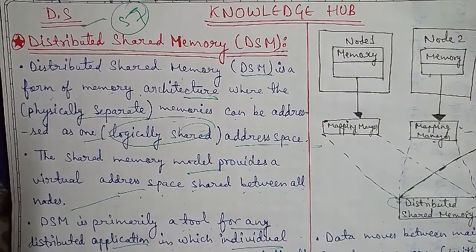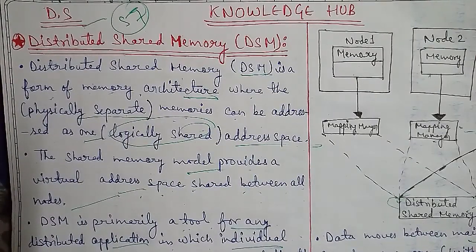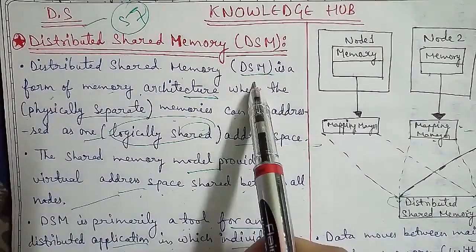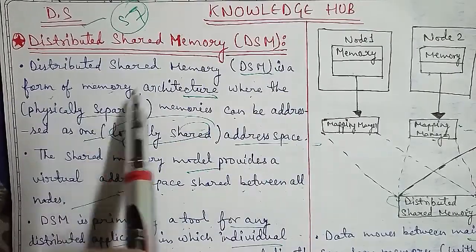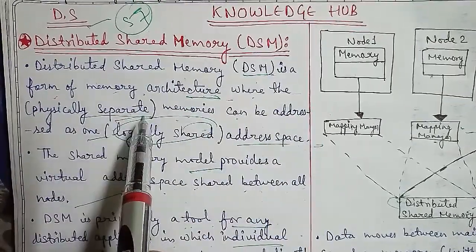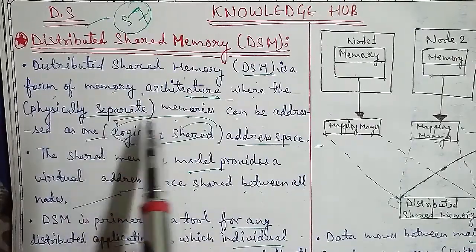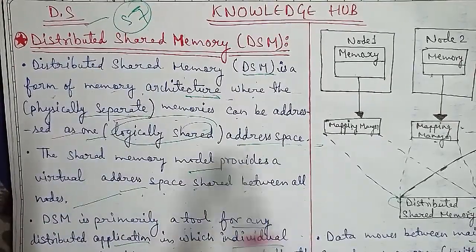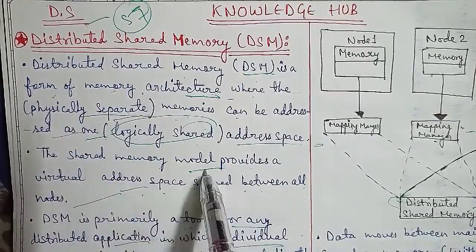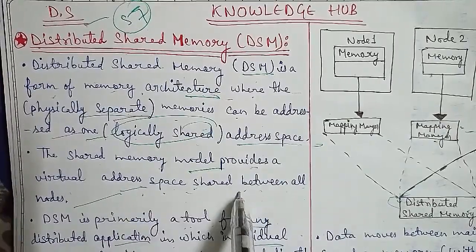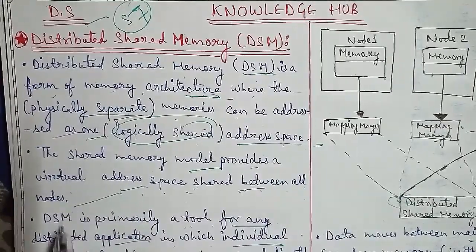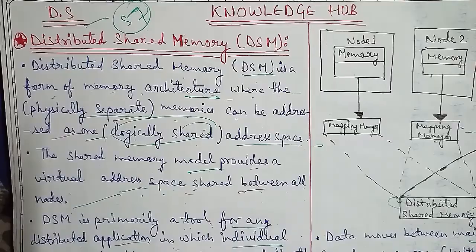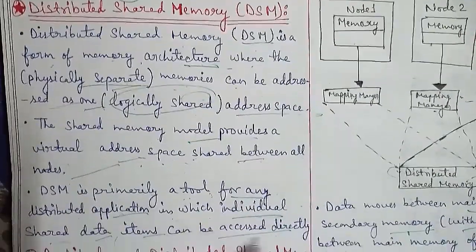Distributed Shared Memory, denoted by DSM, is a form of memory architecture where physically separated memories can be addressed as one logically shared address space. The shared memory model provides a virtual address space shared between all the nodes. DSM is primarily a tool for distributed applications in which individual shared items can be accessed directly.